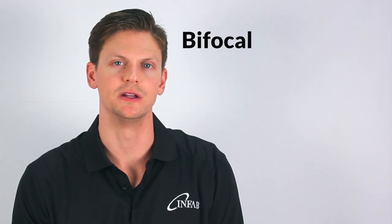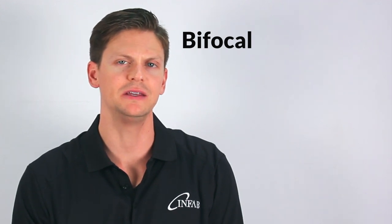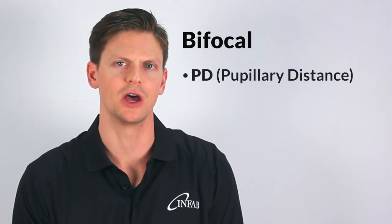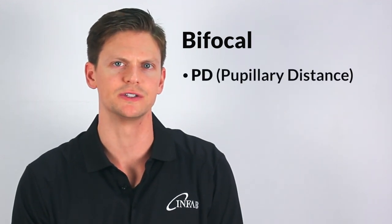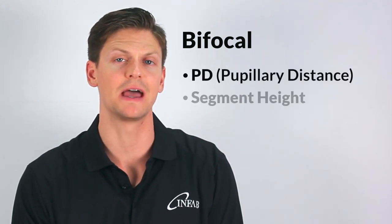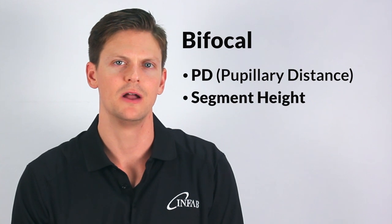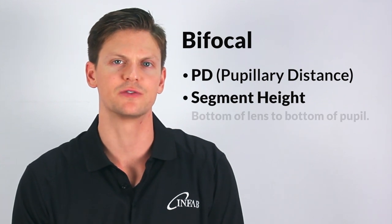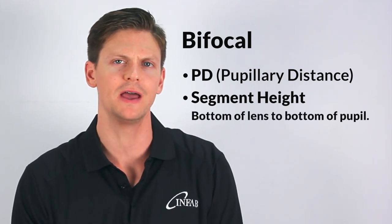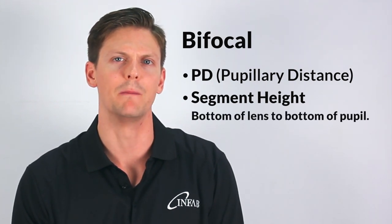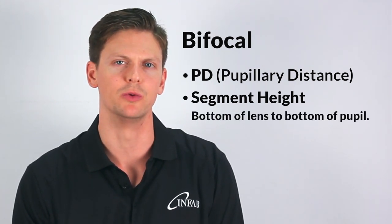For bifocal, there are two measurements needed: the PD — already discussed, pupillary distance — and the segment height. The segment height is from the bottom of the lens to the bottom of the pupil.